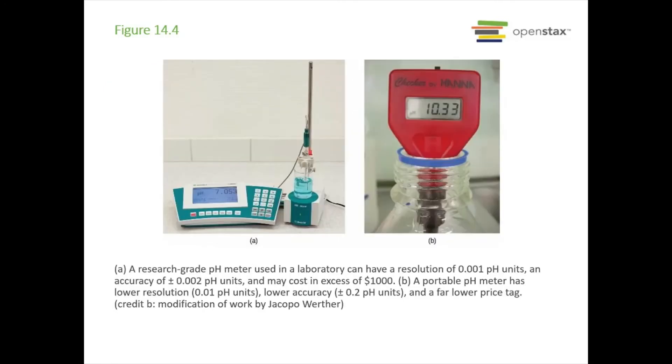These are a couple different pH meters. The one at A is a research grade. These can go down to 0.001 pH units. Very accurate and very expensive. You can get portable pH meters with an accuracy of about plus or minus 0.2 pH units or 0.01 pH unit. These are pretty cheap. So for a lot of people who do stuff with aquariums or swimming pools, a lot of times you can just get one of these cheap pH meters. They work great.